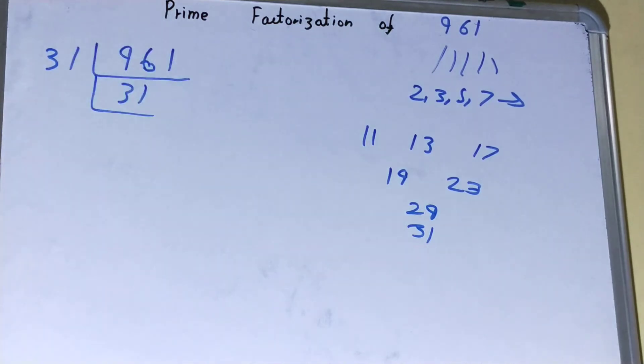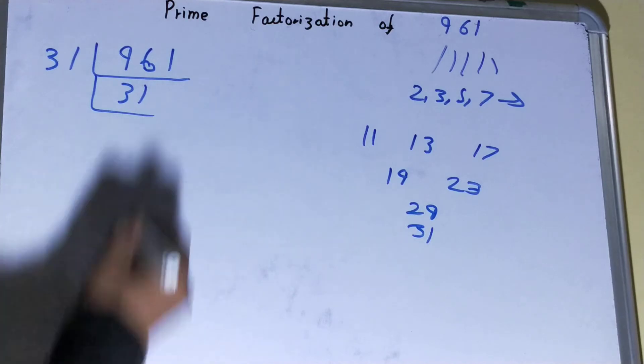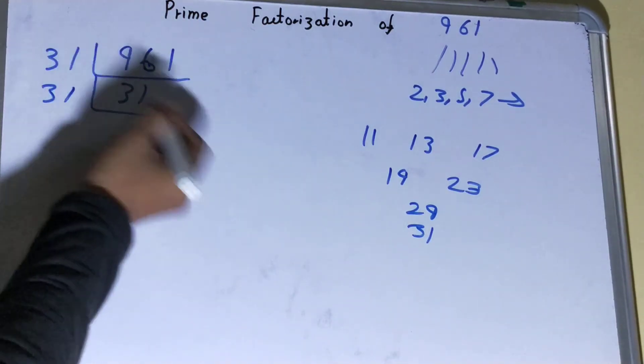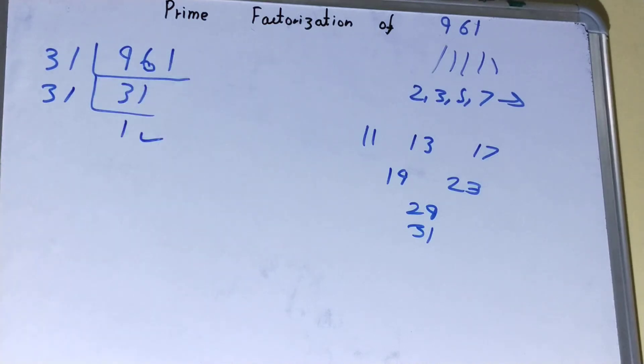31 times. Okay, again try the same process. Is it divisible by 31? Yes, it is. Obviously you will have one as your value. Once you get one as your value,